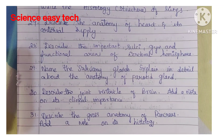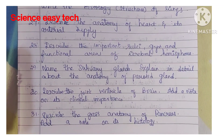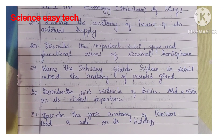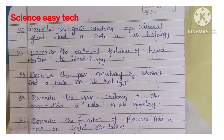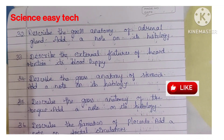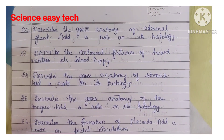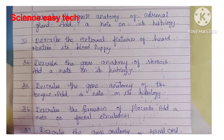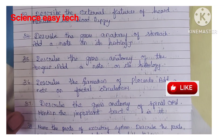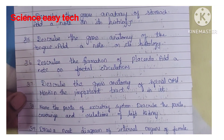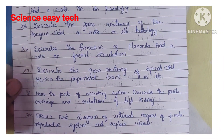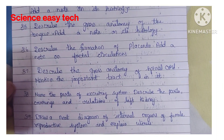Thirty-first question, describe the gross anatomy of pancreas and add a note on its histology. Also, describe the gross anatomy of adrenal gland and add a note on its histology. Thirty-second question, describe the external features of heart and mention the blood supply. Also, describe the gross anatomy of stomach and add a note on its histology. Thirty-fifth question, describe the gross anatomy of the tongue and add a note on its histology.